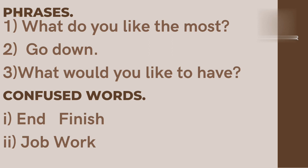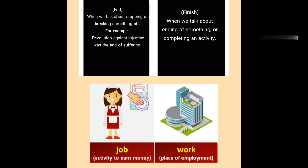And some confused words — because their use in a sentence or paragraph can change the sense or meaning. Let's look at 'end,' 'finish,' 'job,' and 'work.' When we talk about stopping or breaking something off — یعنی کسی کام کو روک دینے یا ختم کر دینے کی بات کرتے ہیں — we use 'end.' For example: 'Revolution against injustice was the end of suffering' — ناانصافی کے خلاف تحریک سے اب تکلیفوں کا خاتمہ ہوگا.